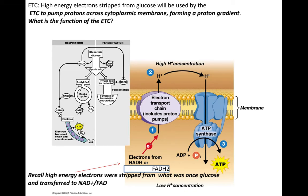ATP synthase's energy source is the proton gradient — the flow of protons. The proton gradient is considered a battery or potential energy, described as the proton motive force, indicating its ability to do work. In bacteria, the proton gradient can drive not only ATP synthesis, but also motility — helping drive rotation of bacterial flagella — and active transport of other molecules.